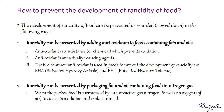The development of rancidity can be prevented or retarded in several ways. First, rancidity can be prevented by adding antioxidants to foods containing fats and oils. An antioxidant is a substance which prevents oxidation — antioxidants are actually reducing agents. When added to foods, they prevent the fats and oils from getting oxidized easily, keeping food good to eat for much longer. Common antioxidants used are butylated hydroxyanisole (BHA) and butylated hydroxytoluene (BHT).